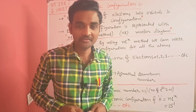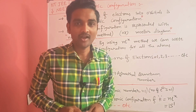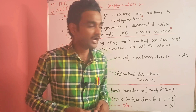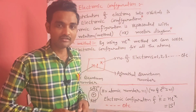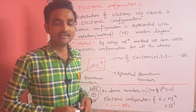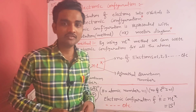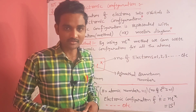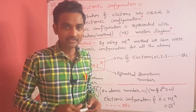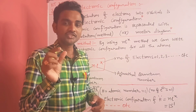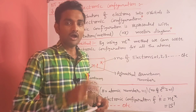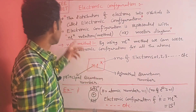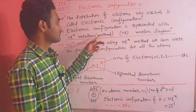Hi dear students, how are you? I hope all are fine. Today let me explain about electronic configuration. Electronic configuration means the distribution of electrons into different orbitals. Simply, we have to distribute the electrons into different orbitals — that is called electronic configuration.